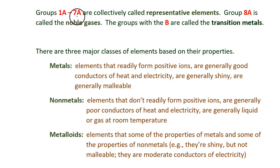Groups 1A through 7A are collectively called representative elements. Group 8A, the very last column, is called the noble gases. The groups with the letter B are called the transition metals.